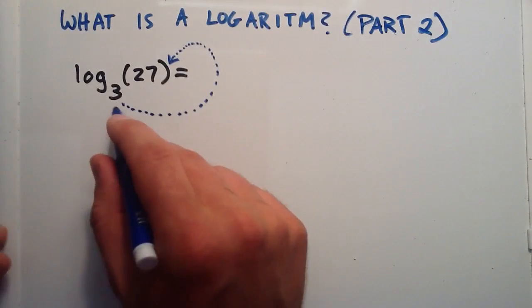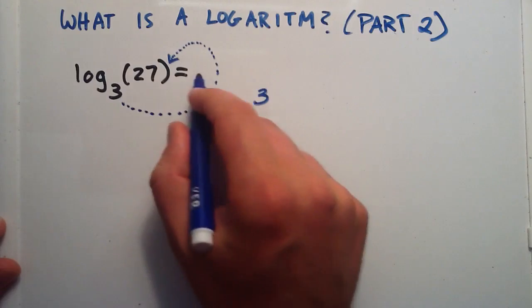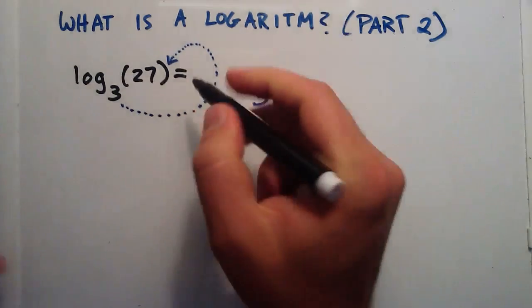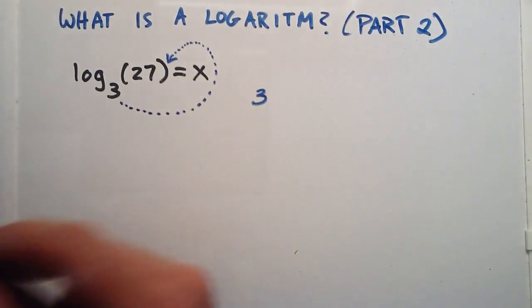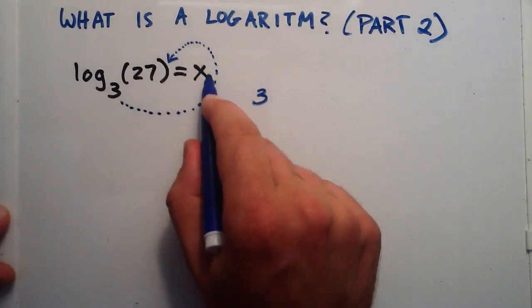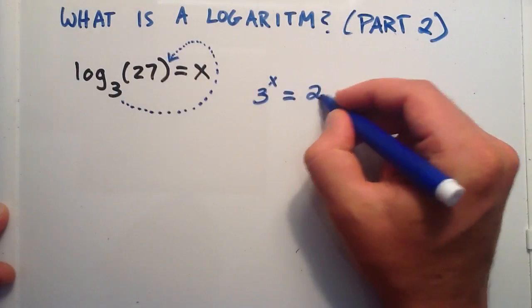And what this means is you take the base, raise it to some power. We'll just call this x for now since we don't know what it is. So the base raised to the x power is equal to 27.